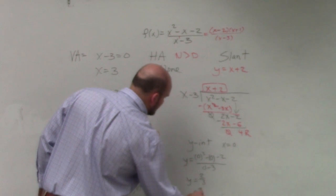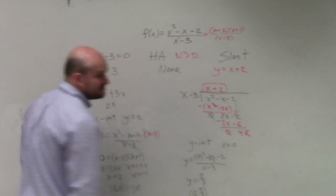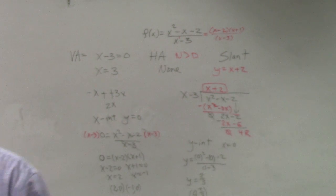So then I'll write that as a coordinate point: 0 comma 2 thirds. OK?